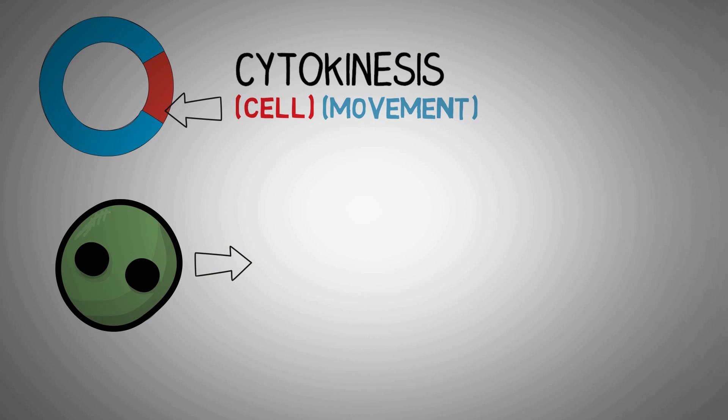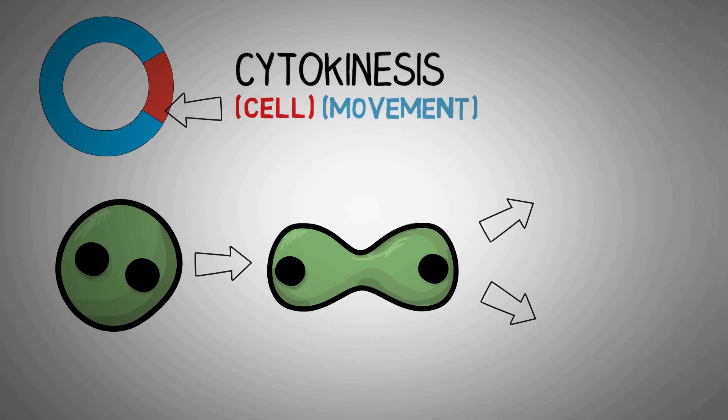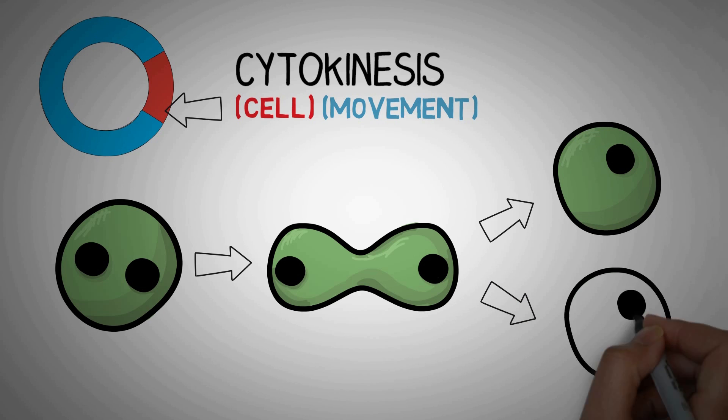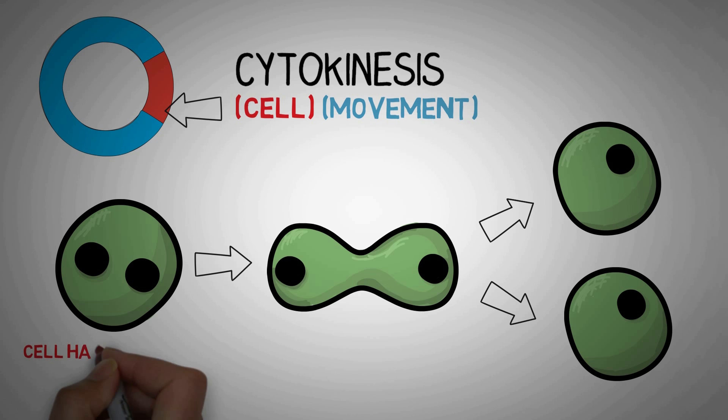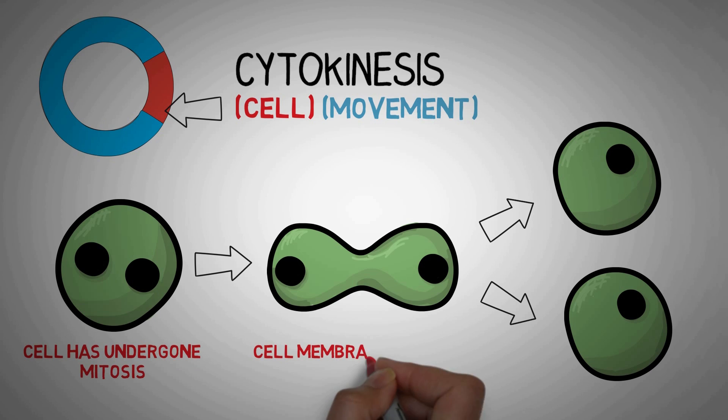The next phase we have is known as cytokinesis. Cyto means cell and kinesis means movement. In this phase the single cell pinches in the middle to form two separate daughter cells each containing a full set of chromosomes within a nucleus. In the first step you can see that the cell has undergone mitosis. Next the cytoplasm pinches in the middle which leads to formation of two new daughter cells.